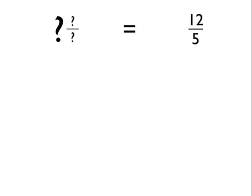Now let's convert twelve fifths into its equivalent mixed number. We're talking about fifths. We've got an improper fraction of twelve fifths, so we're going to be working in fifths.